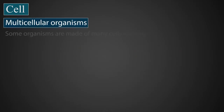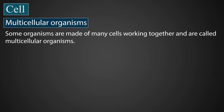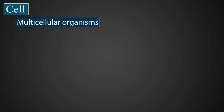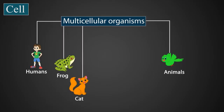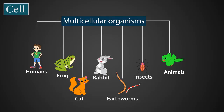Some organisms are made up of many cells working together and are called multicellular organisms. All organisms like humans, animals such as frogs, cats, rabbits, earthworms, and insects, and all other types of organisms are multicellular.